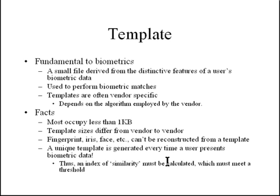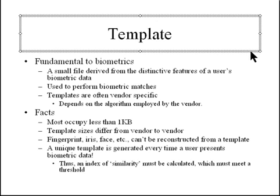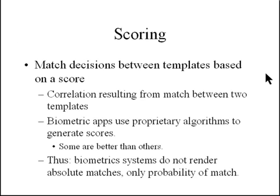The similarity index must meet a certain threshold for the person to be authenticated. If it doesn't meet that threshold, the system denies access. This brings in the concept of scoring — match decisions for authentication between the stored enrollment template and the authentication template are based on this score of similarity.